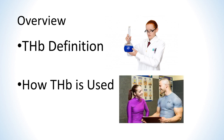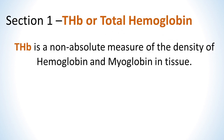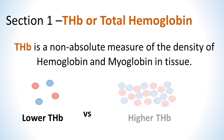The second section will describe the four different types of THB reactions that are commonly observed in athletes. THB is an abbreviation for total hemoglobin, and it's a non-absolute measure of the density of hemoglobin and myoglobin in the tissue. A lower density will cause a lower THB reading, and a higher density will cause a higher reading.